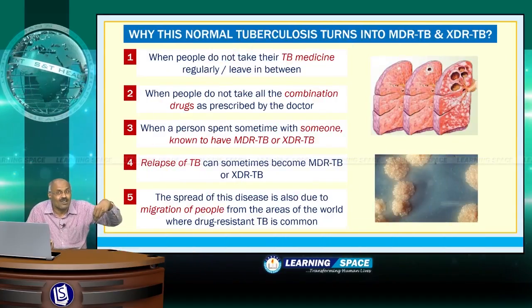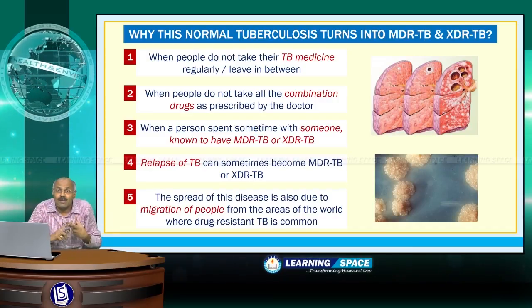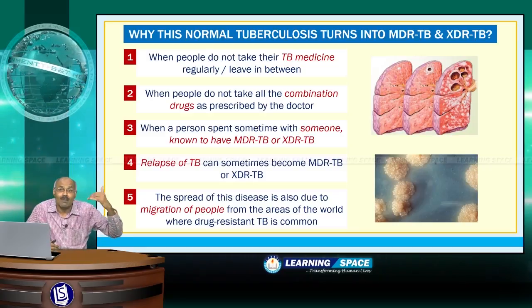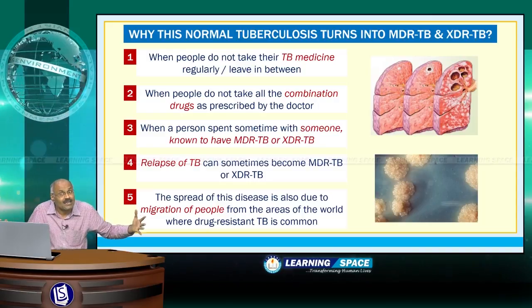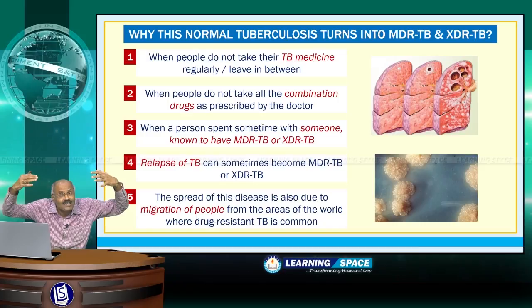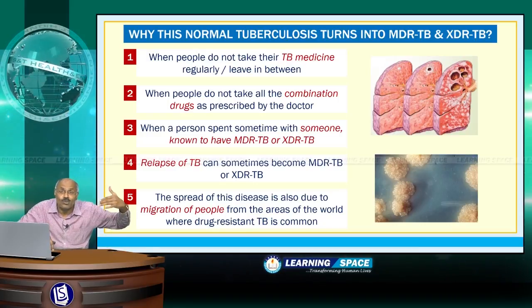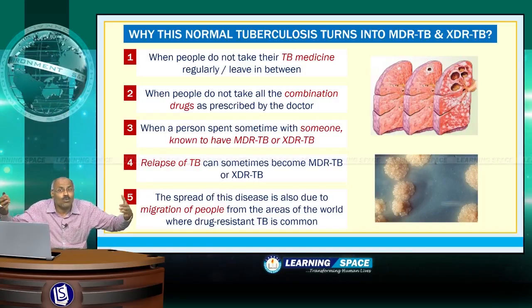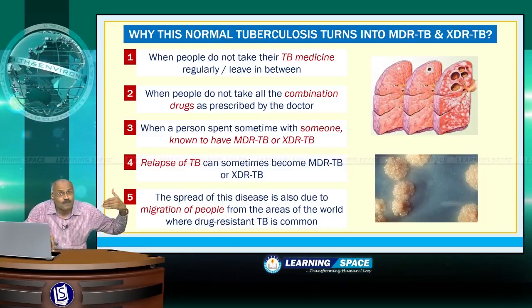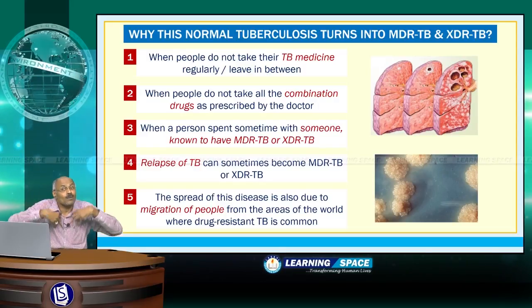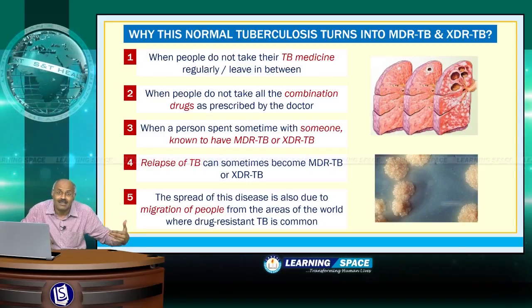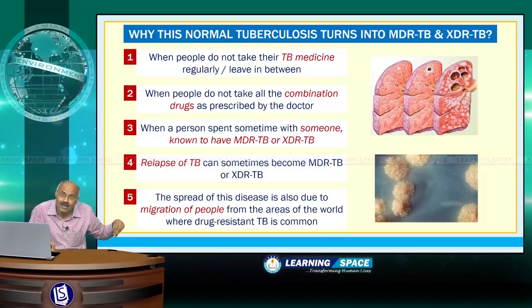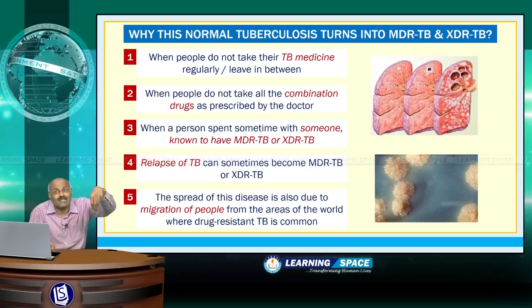Normal tuberculosis turns into MDR-TB and XDR-TB when people do not take their tuberculosis medicines regularly or leave treatment in between — for example, stopping after one or two months when six months is required. It also occurs when people do not take all the combination drugs as prescribed, when a person spends time with someone known to have MDR-TB or XDR-TB, when TB relapses, or due to migration of people from areas where drug-resistant TB is common.